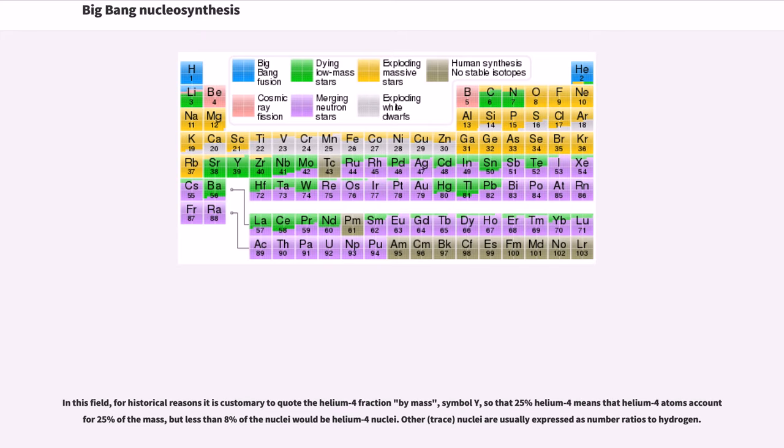In this field, for historical reasons it is customary to quote the helium-4 fraction by mass, symbol Y, so that 25% helium-4 means that helium-4 atoms account for 25% of the mass, but less than 8% of the nuclei would be helium-4 nuclei. Other nuclei are usually expressed as number ratios to hydrogen.